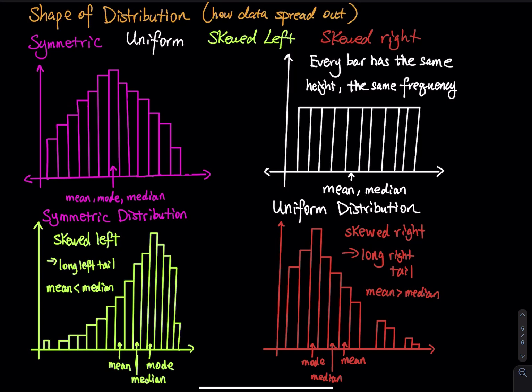The next type is called uniform distribution. In a histogram, every bar has the same height; in a frequency table, every class has the same frequency. In a uniform distribution, the mean and the median are right in the middle. There is no mode because every bar has the same height — none of them has the highest frequency.